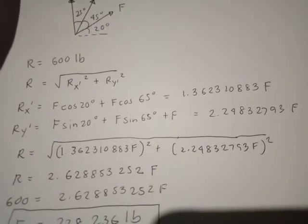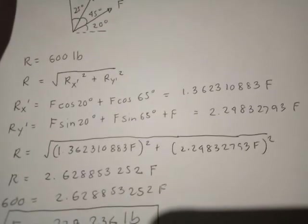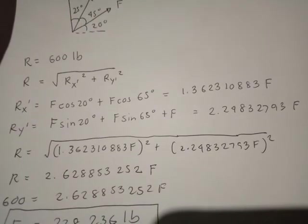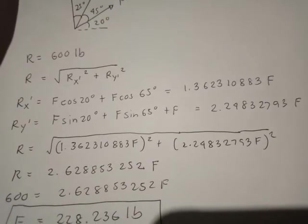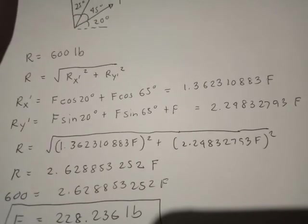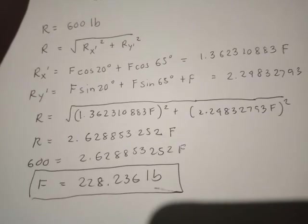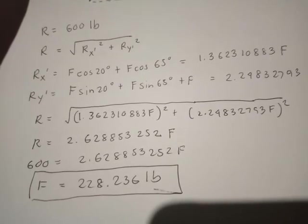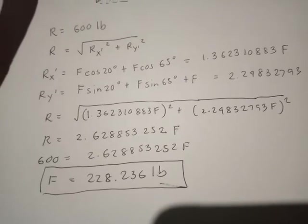We got R X bar is 1.362F and R Y bar is 2.248F. I just complete the 9 decimal places to be more accurate. R is equivalent to the square root of R X bar and R Y bar squared respectively. We get R is equal to 2.628853252F. Therefore, your F is 228.236 pounds.